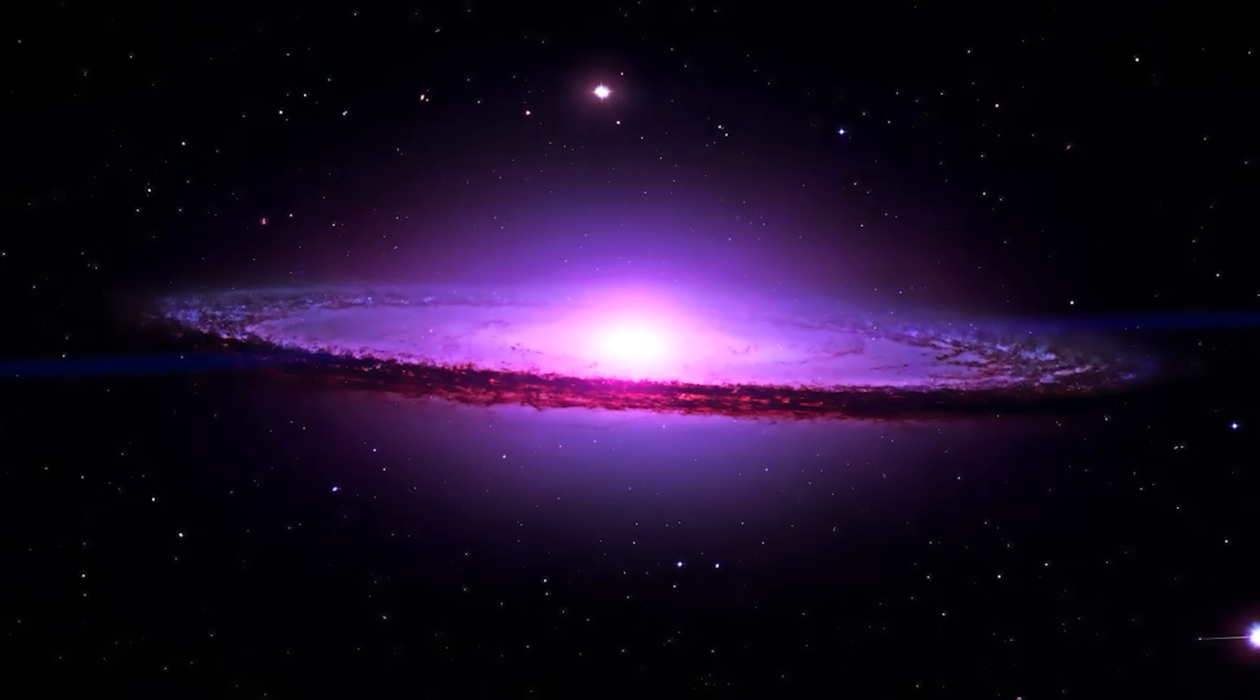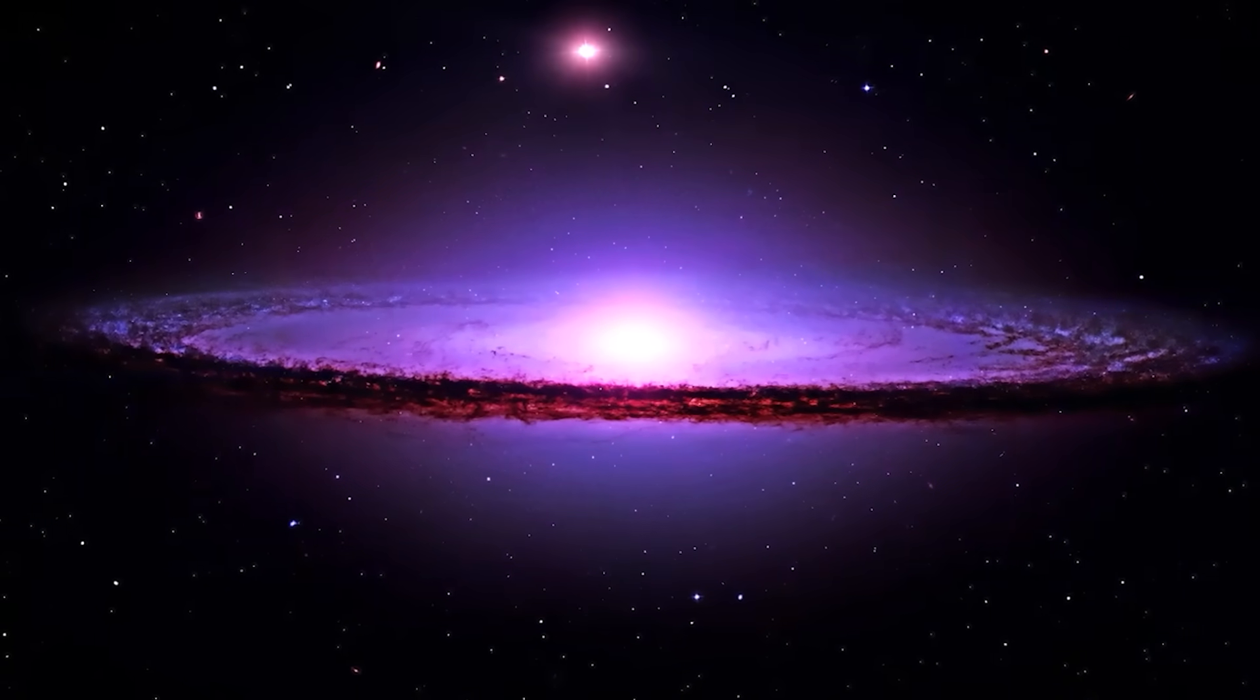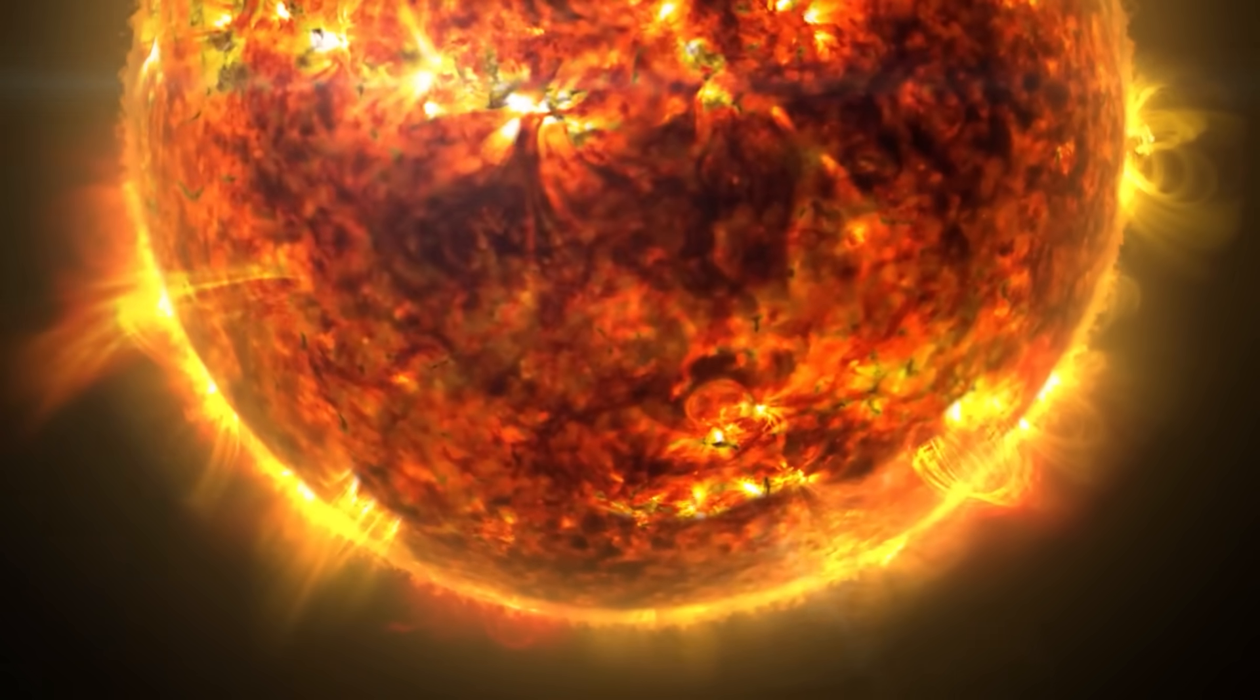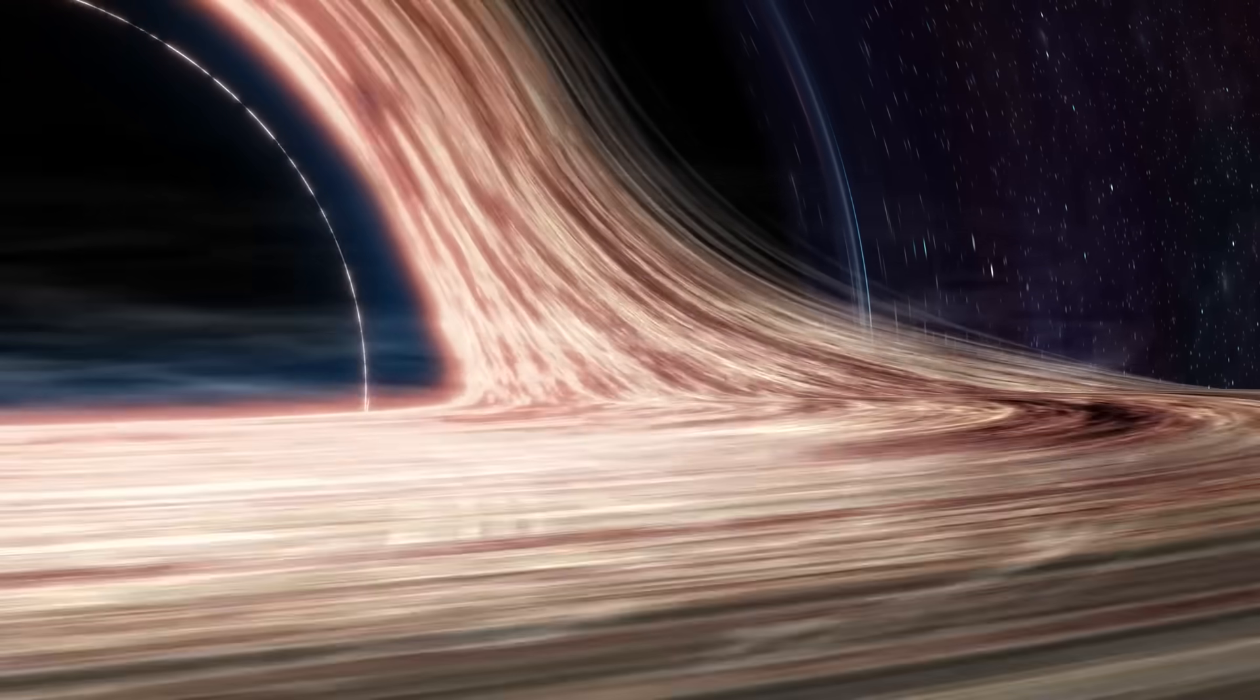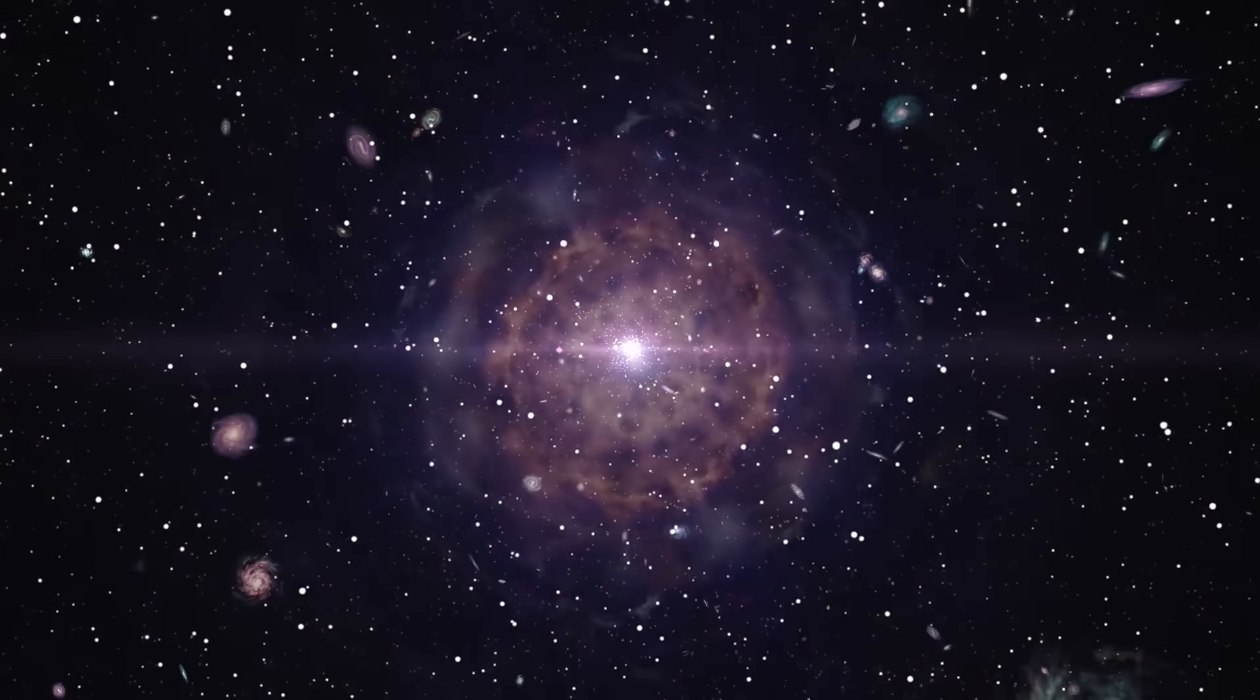As the simulations ran, a clear picture emerged. The only explanation fitting the data was the presence of a monstrous black hole, hundreds of thousands of times more massive than our sun. This cosmic giant acted like a celestial slingshot, flinging stars away at incredible speeds.